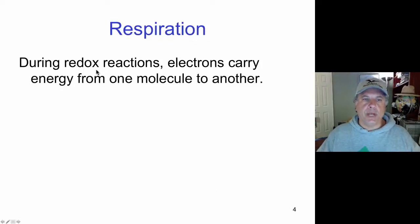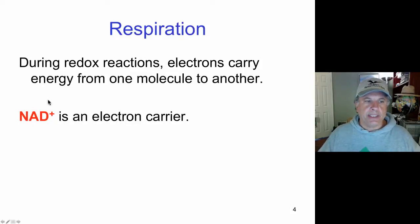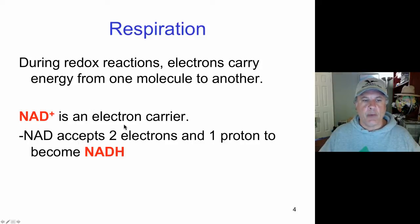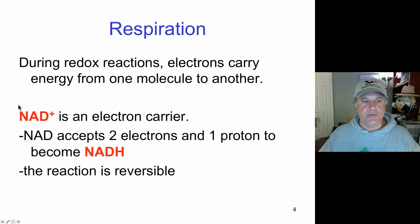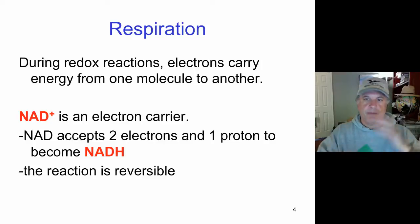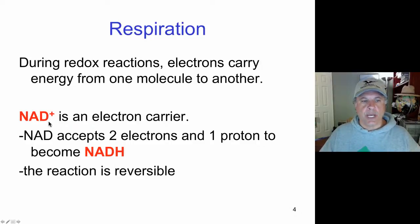During redox reactions, electrons can carry energy from one molecule to another. Nicotinamide adenine dinucleotide — NAD — is what we want to remember. NAD+ can pick up electrons and serve as an electron carrier. When it picks up two electrons and one hydrogen ion (a proton), it becomes NADH. This reaction is reversible. NAD+ and NADH are part of a pool of NAD in the cell and are recycled back and forth. When NAD+ becomes NADH, it's accepting electrons — it's becoming reduced. Likewise, NADH can be oxidized and donate electrons to compounds.